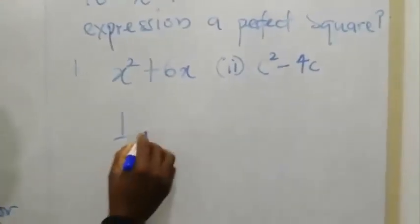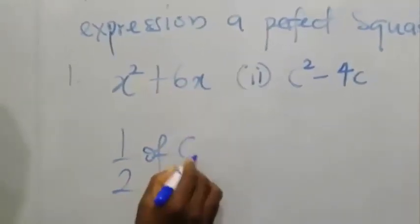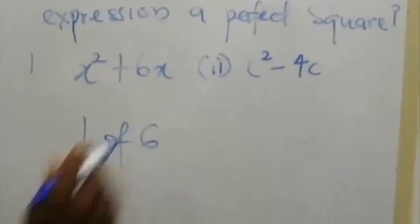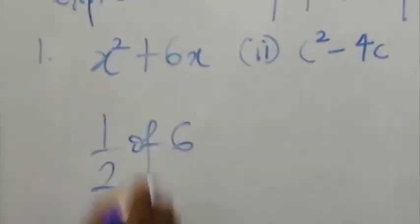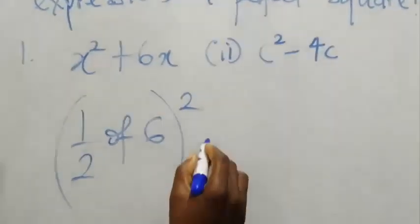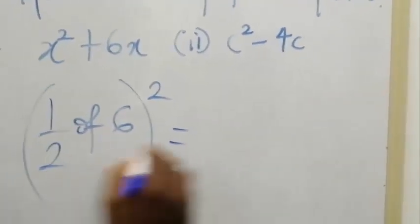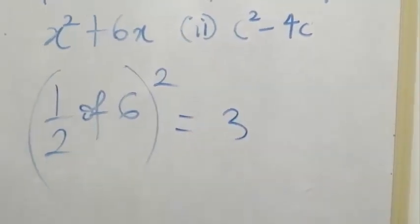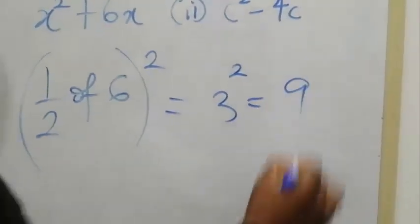Half of the coefficient of x, this is 6. And square all. Can we do that now? What is half of 6? Good. 3. All square. That would give us 9.